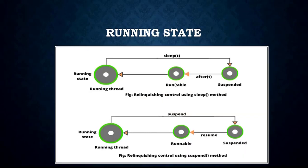The Running state means the processor has allocated a time slot to the thread for its execution. When the thread scheduler selects a thread from the Runnable state for execution, it goes into the Running state. In the Running state, the processor gives its time to the thread and executes its run method. This is the state where the thread performs its actual functions.